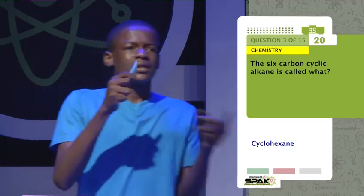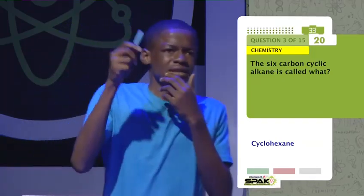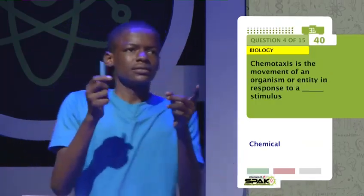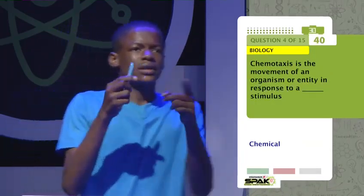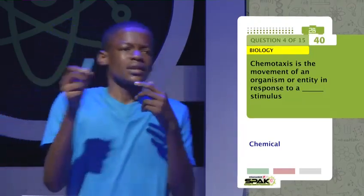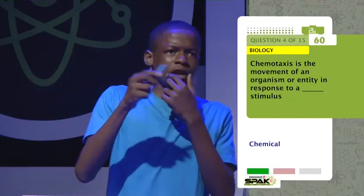The 6-carbon cyclic alkane is called what? Cyclohexane. Chemotaxis is the movement of an organism or entity in response to what stimulus? Chemical.